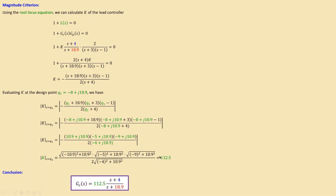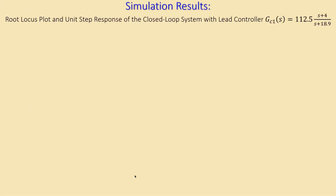We have now determined all three parameters of the lead controller. The initial designed lead controller is GC1 = 112.5 × (s+4)/(s+18.9). Let's look at the simulation results in MATLAB to verify this.